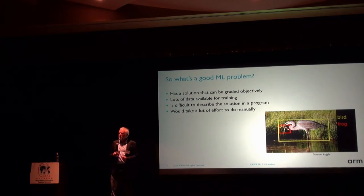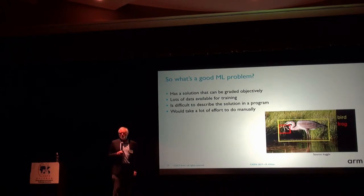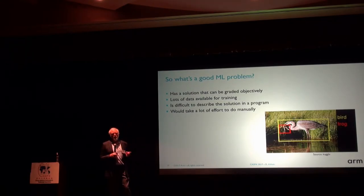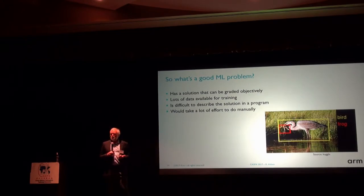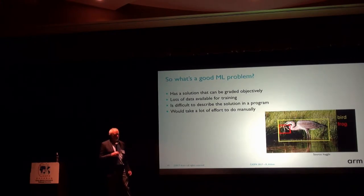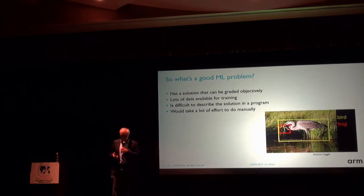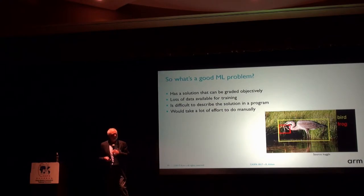It's also important that there be a lot of data available, because as you saw in Dr. Lee's presentation, there's a huge amount of training that's necessary, and the more data you have, the better your training works. Third, it's difficult to describe the solution in a program — conventional software gets too complicated too fast. And lastly, doing this by hand would just be too hard. Those are the characteristics of a good machine learning problem.